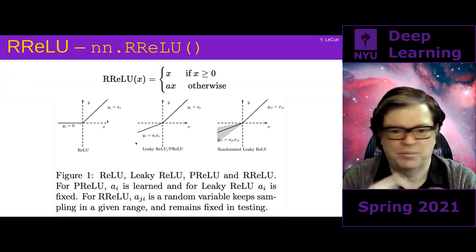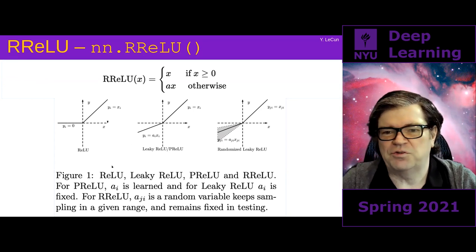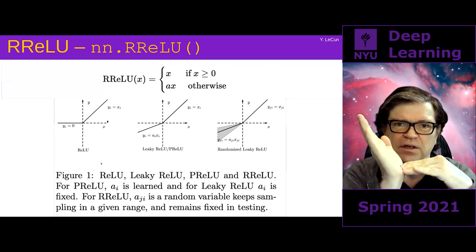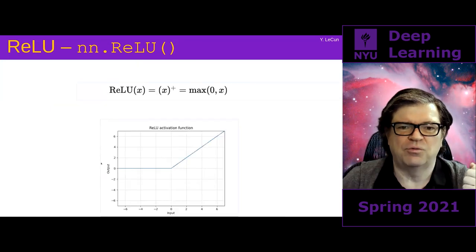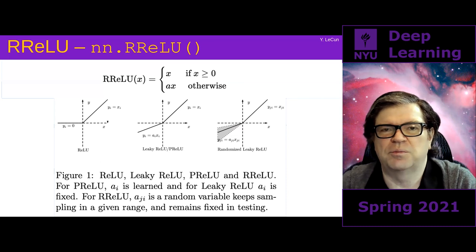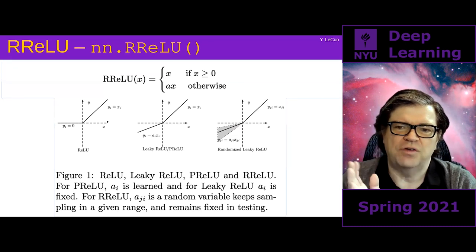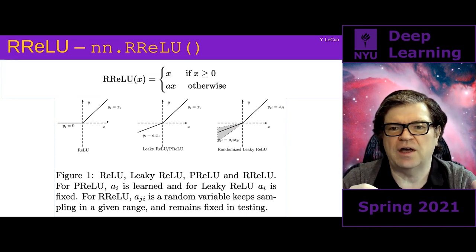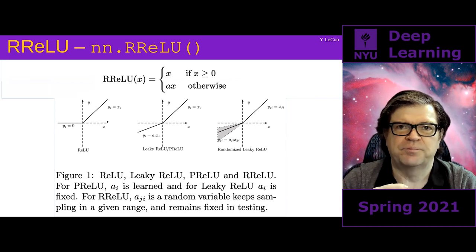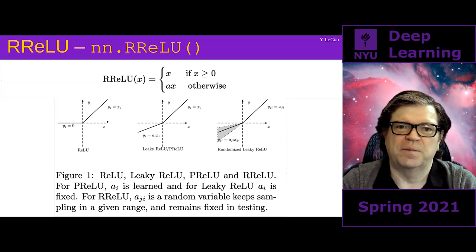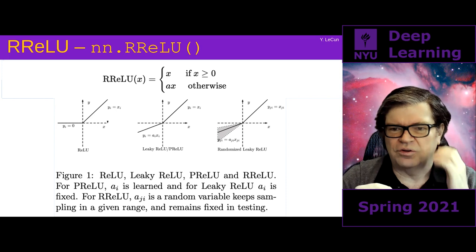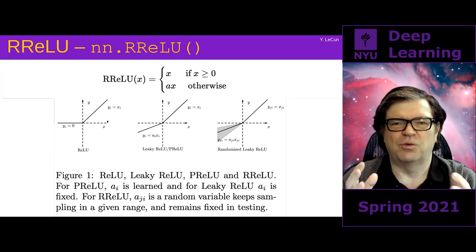Leaky ReLU and PReLU are versions where the negative part also has a slope, which can be trainable or randomly set. It's a good idea to have a function with only one kink, and that's probably one reason why ReLUs and variants have become so popular — they are equivariant to scale, meaning when the input is multiplied by two, the output is also multiplied by two. In mathematics this is also called homogeneous.